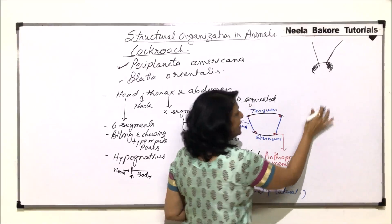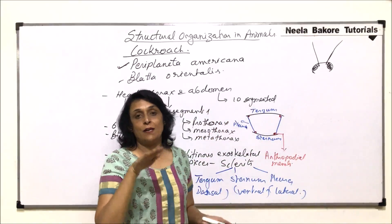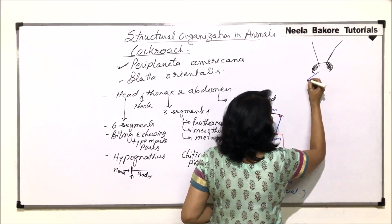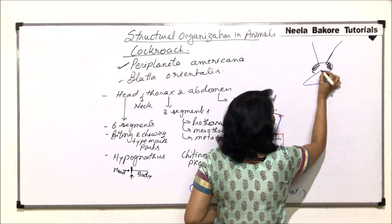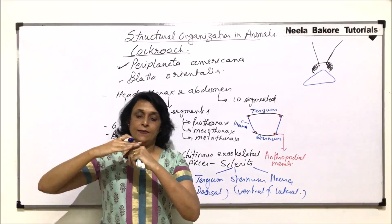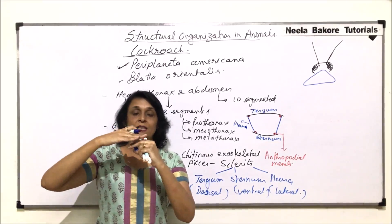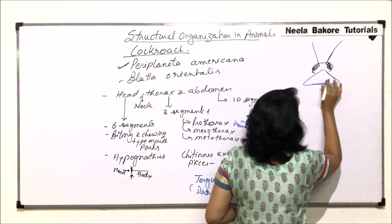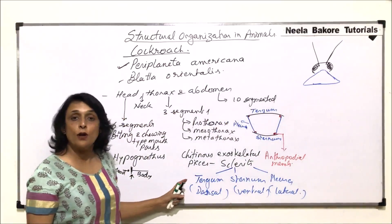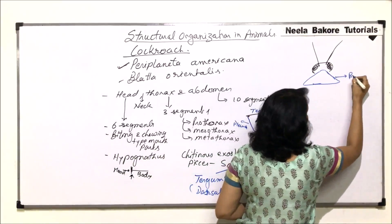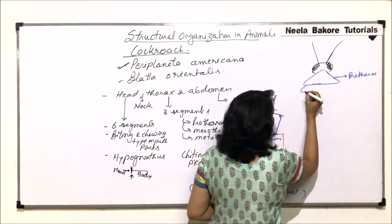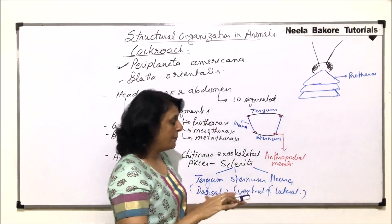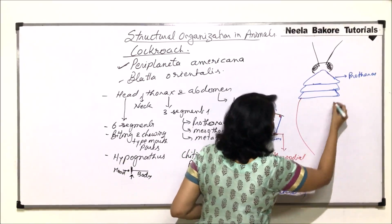The head is connected to the thorax with the help of a neck, but if we see it from the dorsal side, the neck is not visible. There is a triangular piece which actually covers a little part of the head, so the neck is hidden underneath. The first dorsal piece is the tergum of the prothorax. Then there is a smaller piece which is the mesothorax, followed by the third piece which is the metathorax, and behind it is the ten-segmented abdomen.